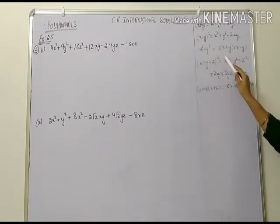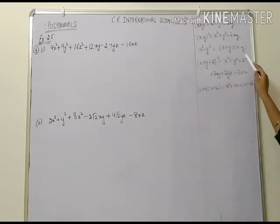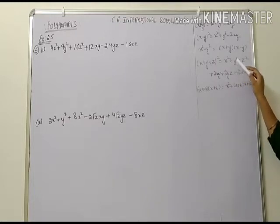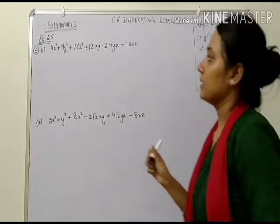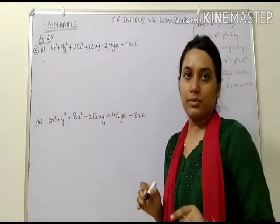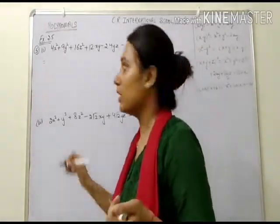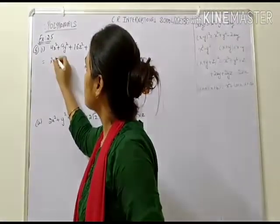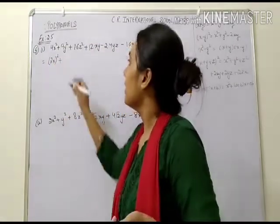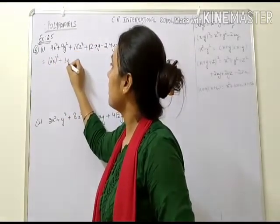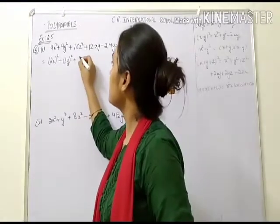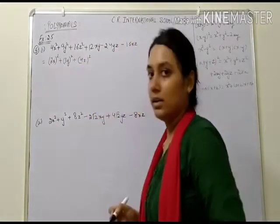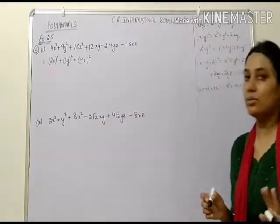How do I convert this into the RHS form? We need 3 terms as a whole square. Let's look at the first term: 4x square — we can write this as 2x whole square. Next, 9y square — we write it as 3y whole square. Can we choose 16z square? Yes — 16z square equals 4z whole square. Is that clear?